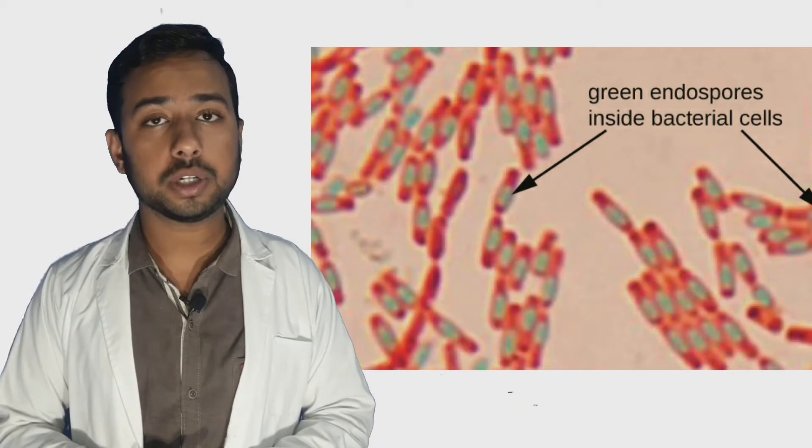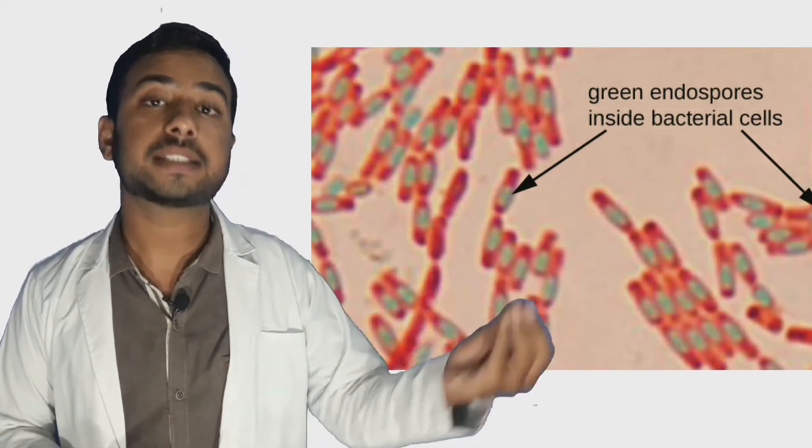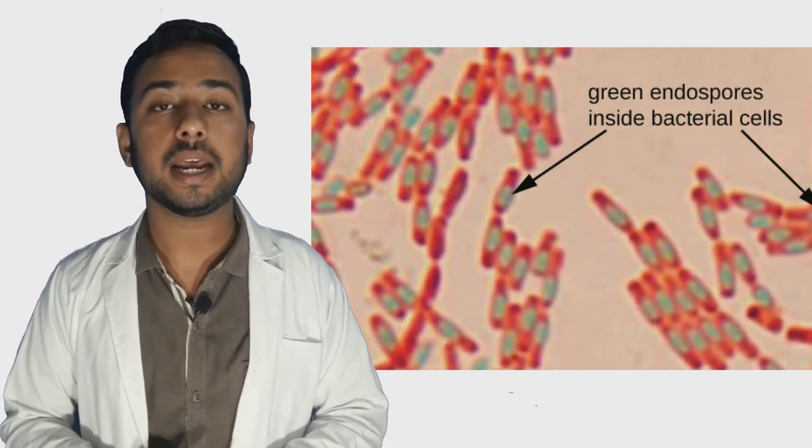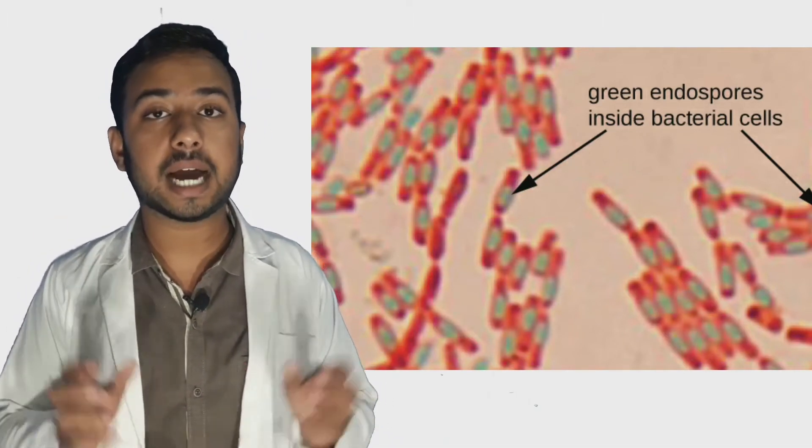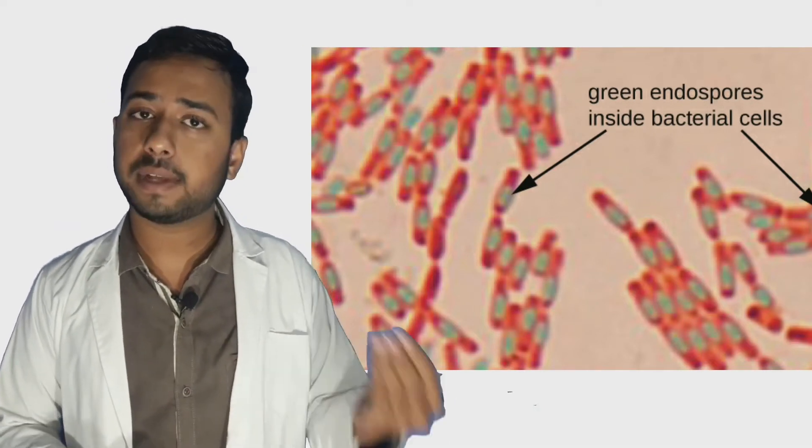In endospore staining, we are going to visualize that endospore in the bacteria. Inside the bacteria, the endospore will look greenish in color and the bacteria will look dark pinkish or reddish in color because we stain the bacteria with safranin.